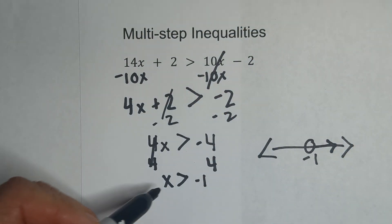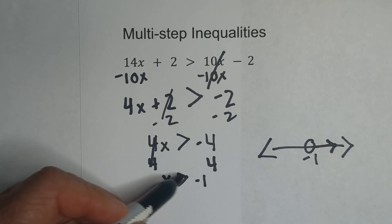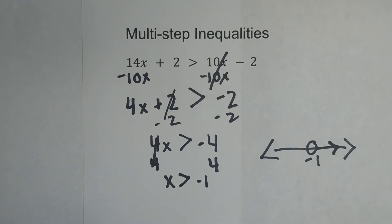Let's check it. 0 is greater than negative 1. So there we go. That's the first one.